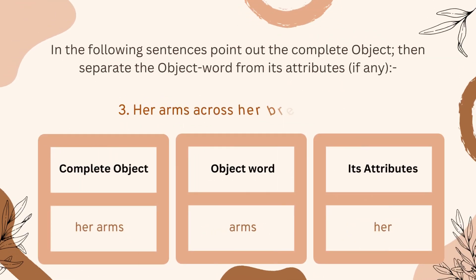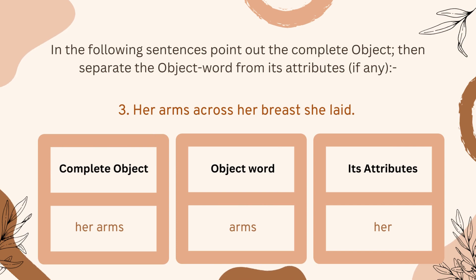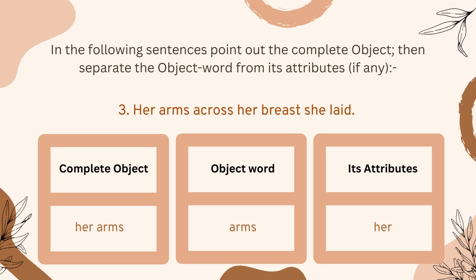Number three: 'Her arms across her breast she laid.' We have two words as the complete object — 'her arms.' 'Arms' is the object word and 'her' is used as an attribute of it.